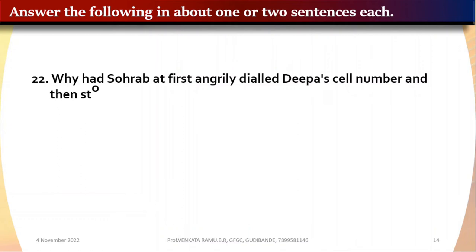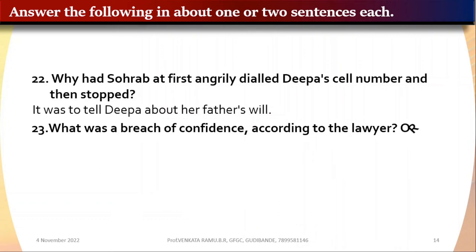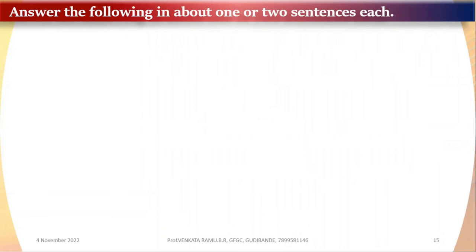Question 22: Why had Saurabh at first angrily dialled Deepa's cell number and then stopped? It was to tell Deepa about her father's will. Question 23: What was a breach of confidence according to the lawyer, and why did Saurabh not tell Deepa about her father's will when it was drafted? It was a breach of confidence to tell Deepa about her father's will in advance.